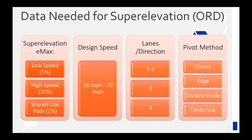For superelevation, we need similar information: the superelevation max rate and the design speed. Especially for high-speed roadways, we need to know the number of lanes per direction. There are also a few different pivot methods — there are a lot more in ORD than there used to be in SS4. You can rotate about the centerline, divide inside, or crown, among other options, to make sure you're meeting standards or your specific project needs.